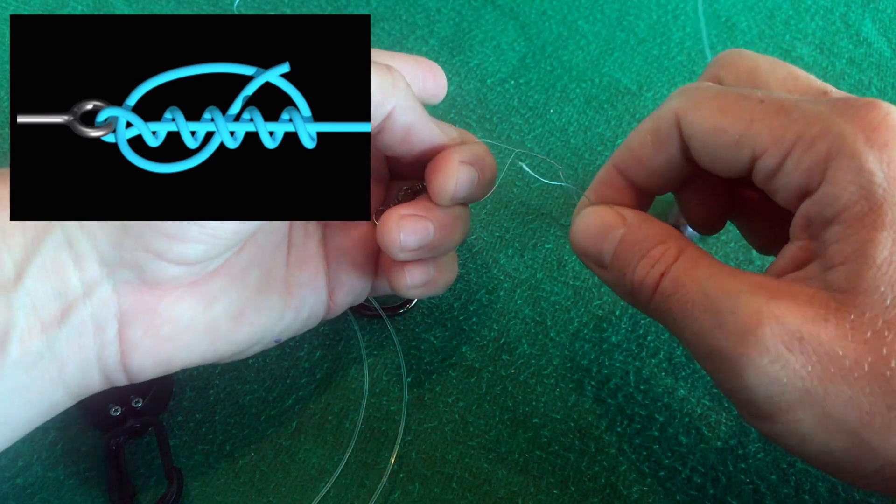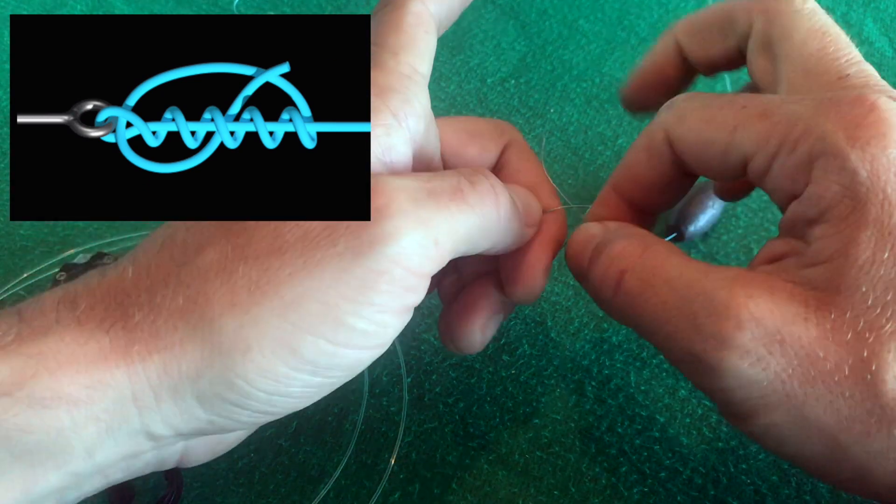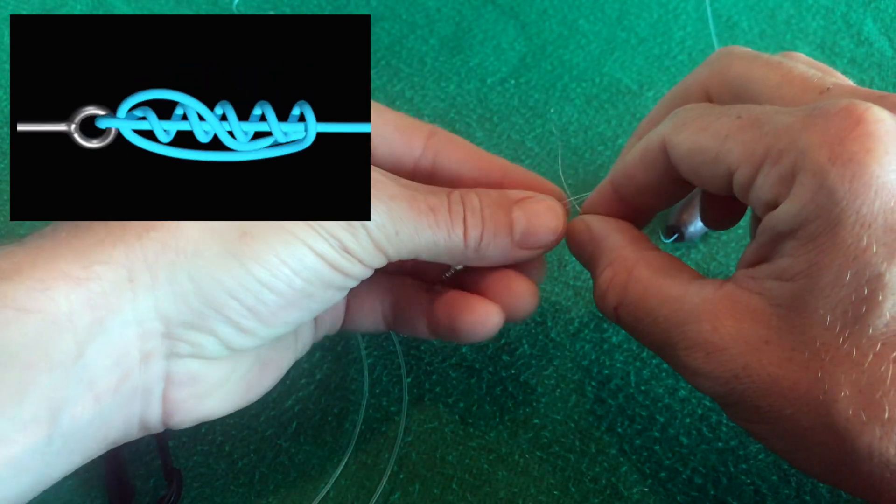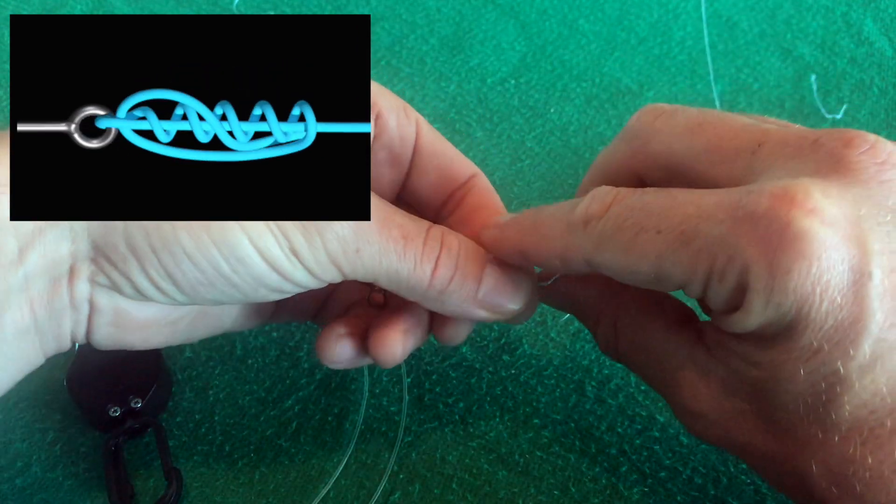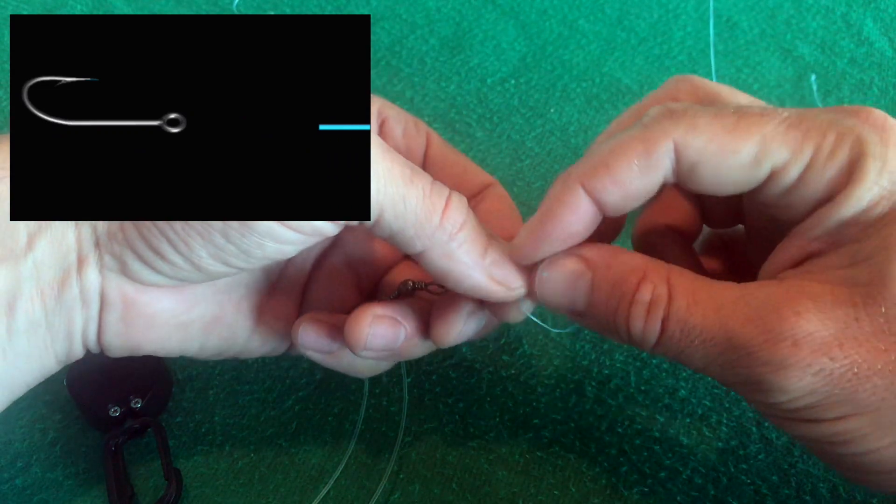And then it leaves a big loop that I can put my main line back through that hole and then right back through this hole. That is the cinch knot.